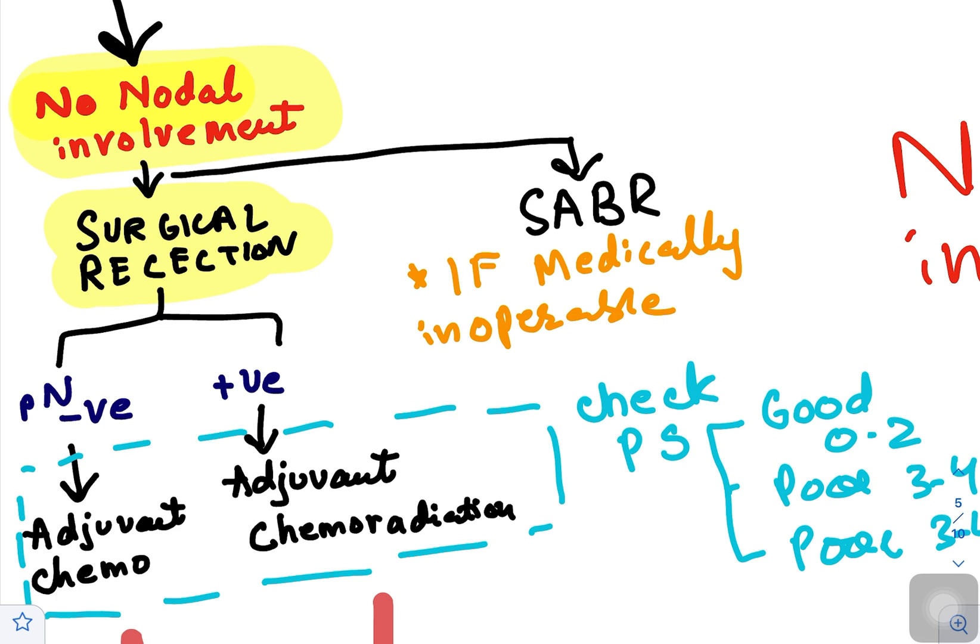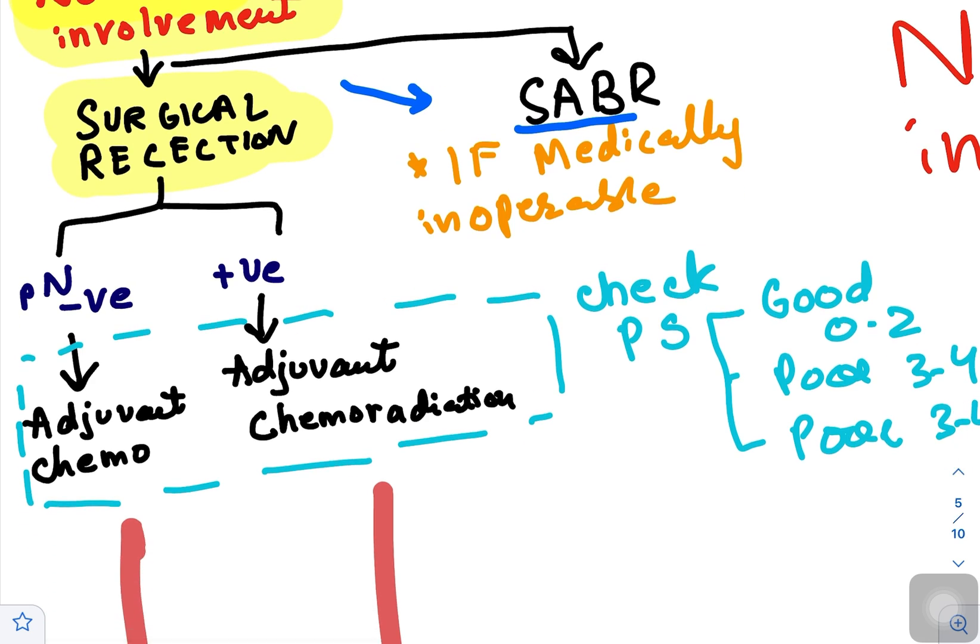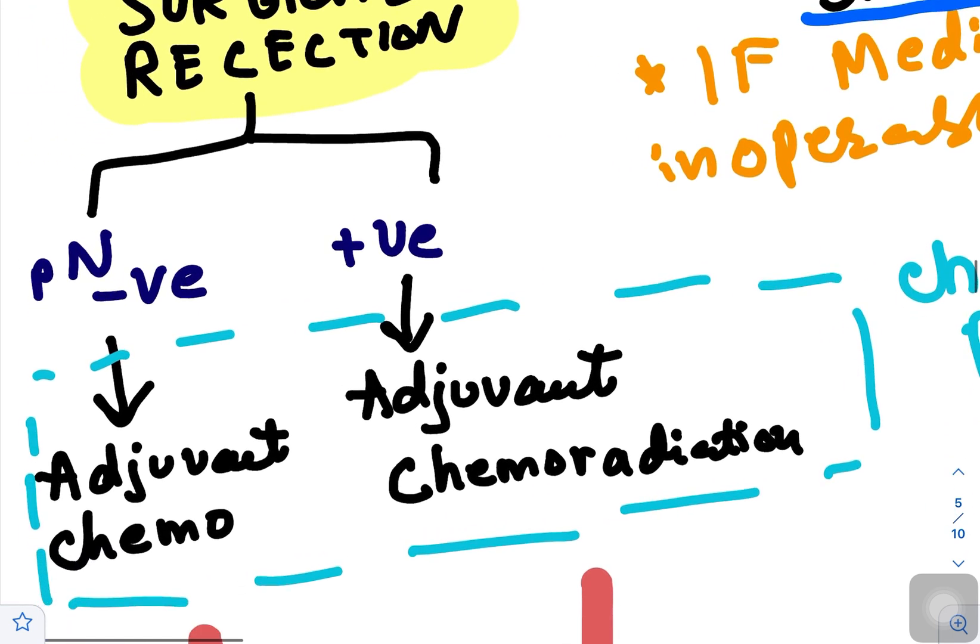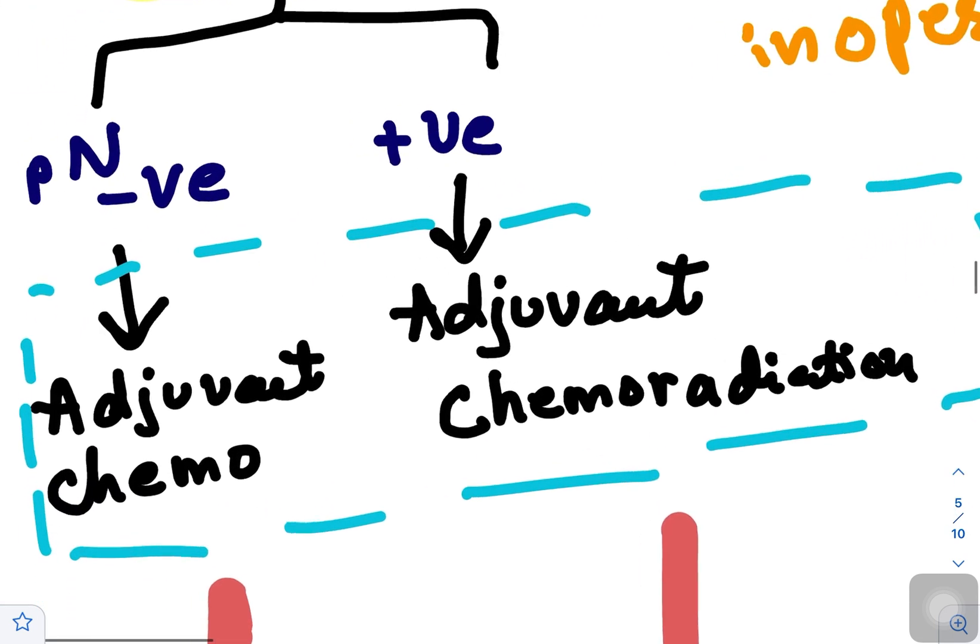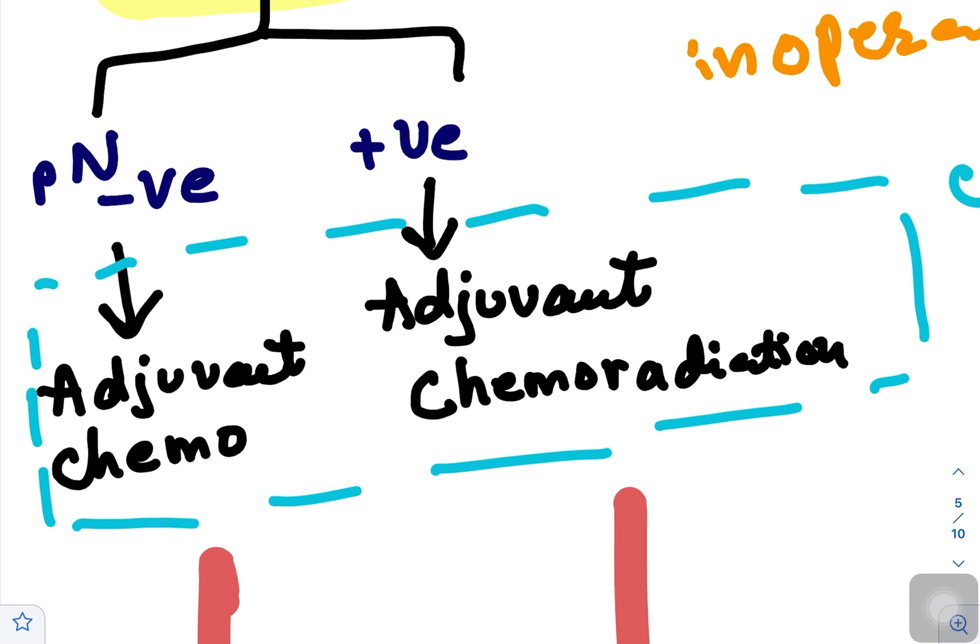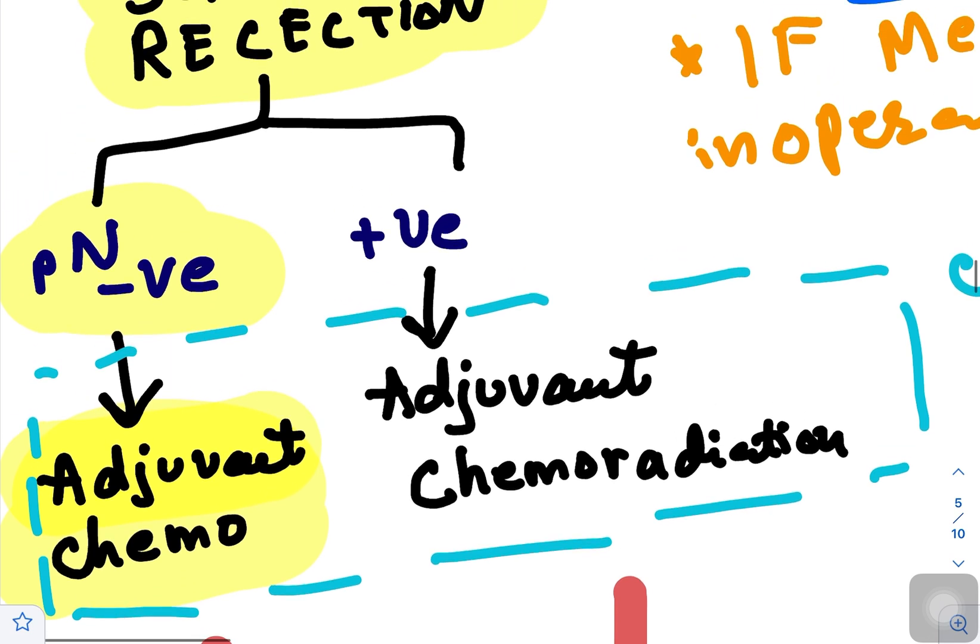If the patient is not medically fit for surgery, send patient for SABR - stereotactic ablative body radiation therapy. Once surgical resection is done, see if there is nodal involvement. If no nodal involvement, simple adjuvant chemotherapy. If pathological lymph nodes positive after surgical resection, go for adjuvant chemoradiation.